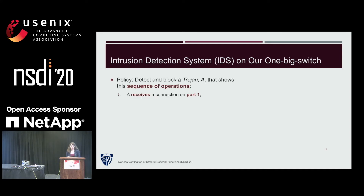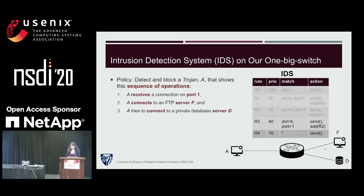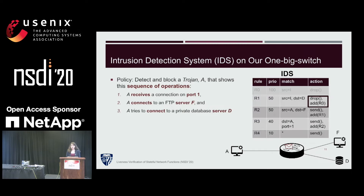Suppose we have an IDS with rules such that if host A receives a connection on port 1, then A connects to an FTP server, and then tries to connect to a private database, then A is a trojan and should be blocked. We can program this using these rules. Initially, two rules are present; if A receives a connection on port 1, R3 is executed and R2 is added. If A then sends a packet to F, execution of R2 adds R1. If A then tries to reach D, execution of R1 adds R0, which blocks A.